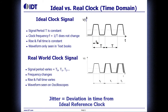The easiest place to understand jitter is the time domain, and we'll look at an ideal clock signal versus a real-world clock signal. The picture on the top is an ideal clock — the signal period T is constant, the clock frequency (which is the reciprocal of time) is also constant, and the rise and fall time is constant. Obviously this waveform is only seen in textbooks. On the bottom is a real-world clock signal where the signal period varies, the frequency changes, and the rise and fall time varies. This is what engineers see on oscilloscopes in their systems today.